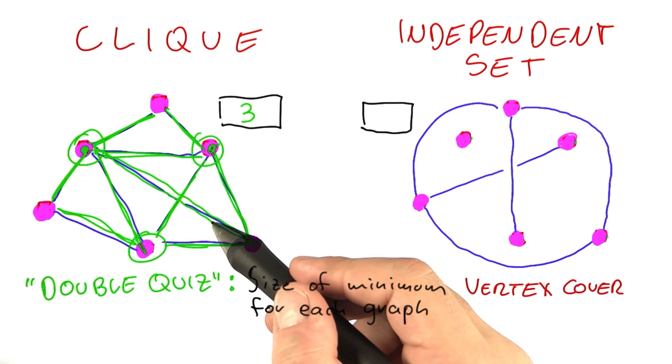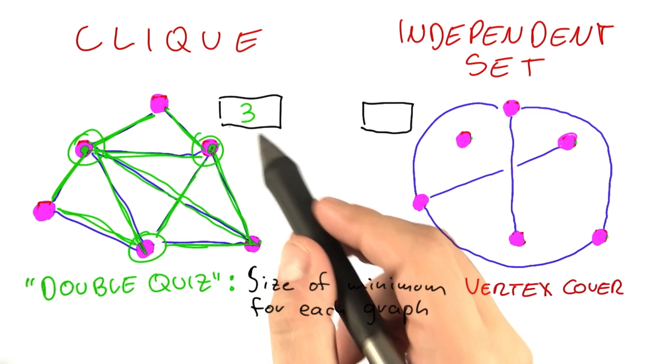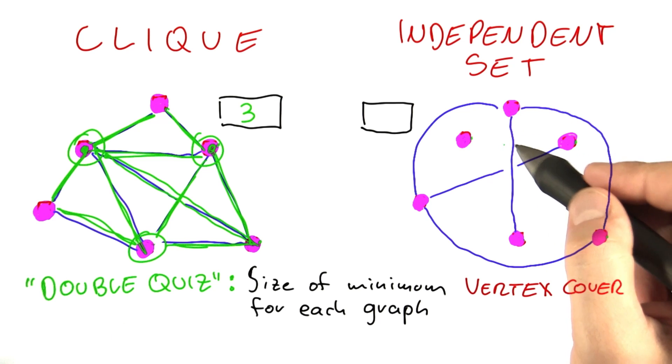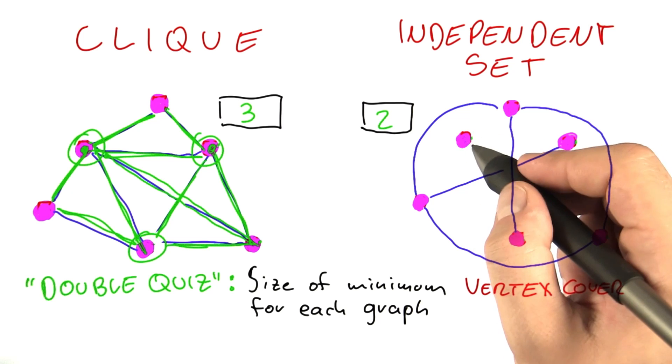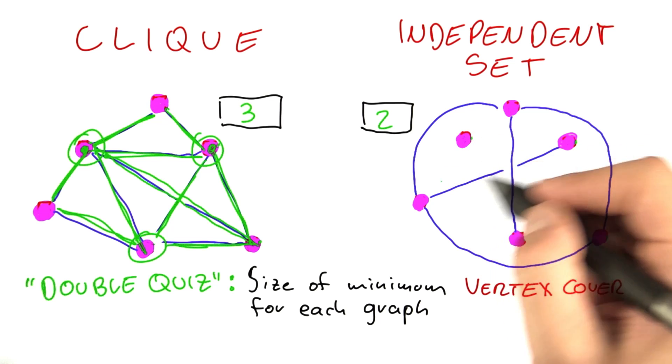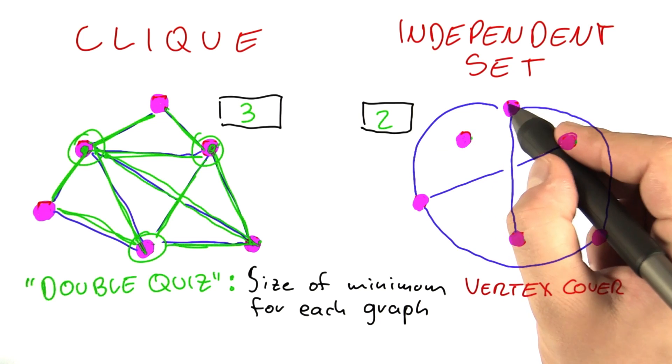And there's alternative solutions, but none that contains less than three vertices. Now what about over here? Here we can find a very small vertex cover using just two vertices. This vertex here we just don't even need to care about because it has no edges that it's connected to.